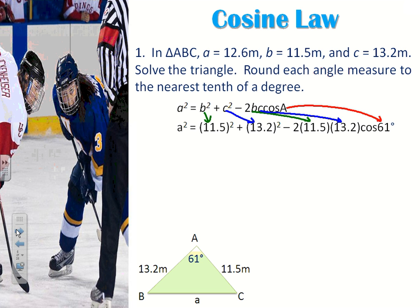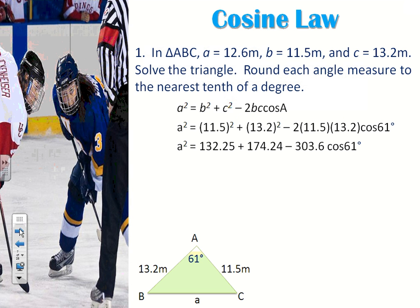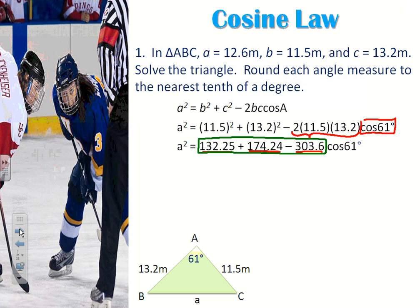I'm going to simplify by figuring out what those squares are. So 11.5 squared gives me this value, and 13.2 squared gives me this value. That 300 comes from all three of these multiplied together, because cos 61 has to stay together by itself — that's where the 303.6 comes from. People make a common mistake of adding and subtracting all three values together. You can't do that because the 303.6 is multiplying cos A. Remember BEDMAS — you do multiplication before subtraction.